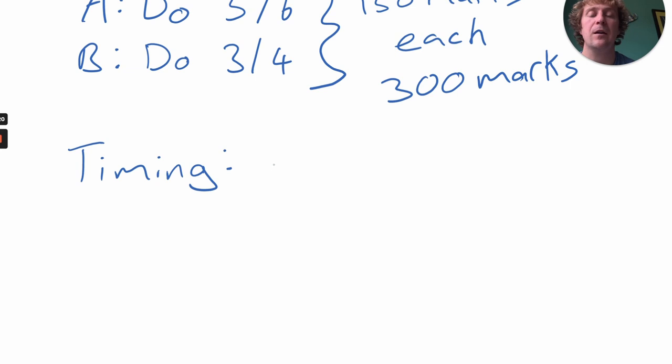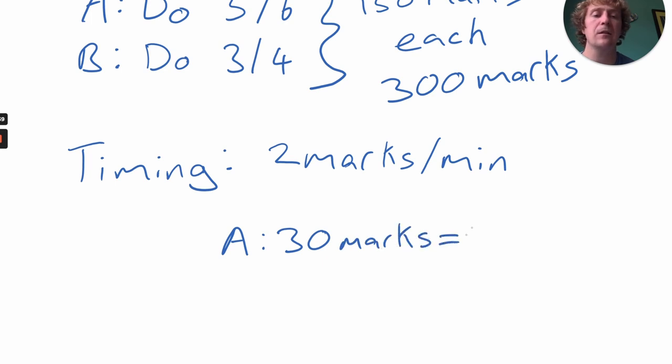Timing is going to be 2 marks per minute—that's the rule you use. In this exam, all of the questions in Section A are 30 marks, so that means you're going to take 15 minutes max in each question in Section A.